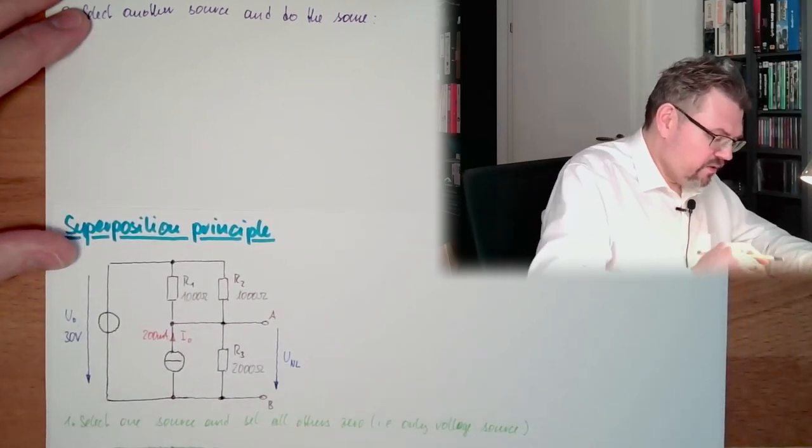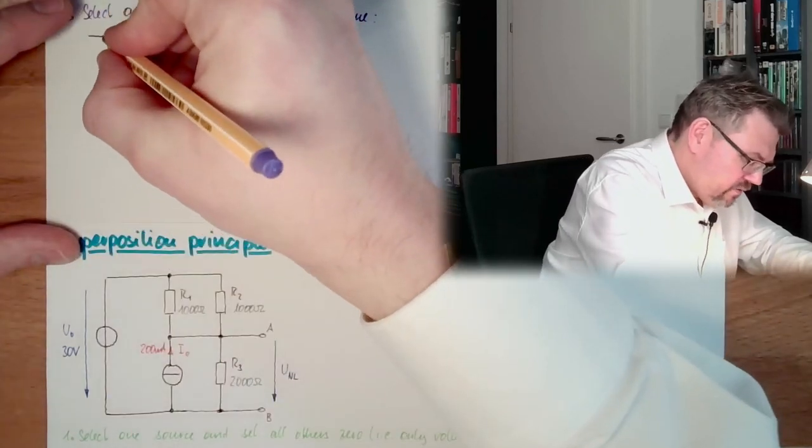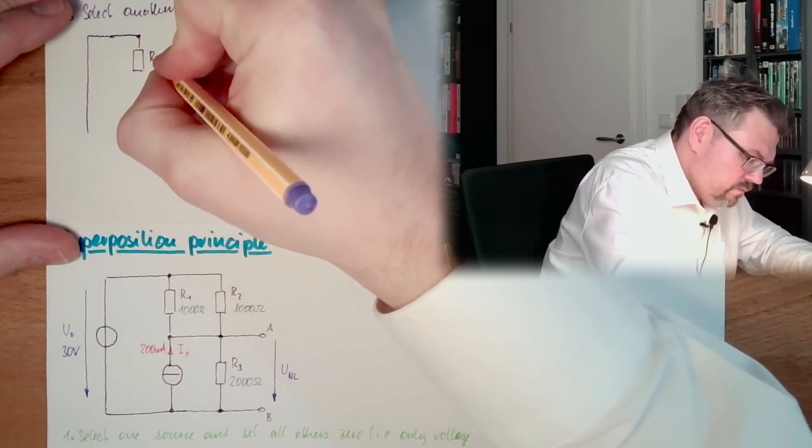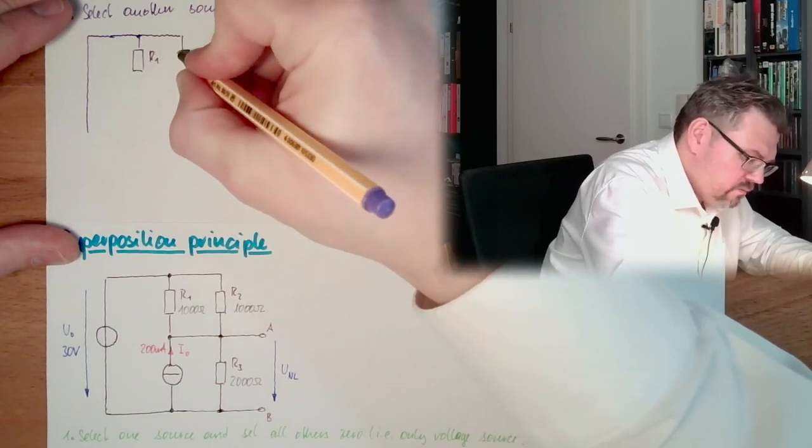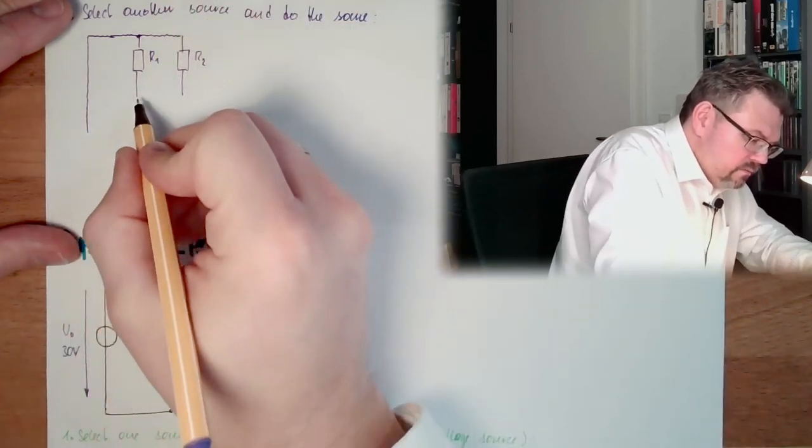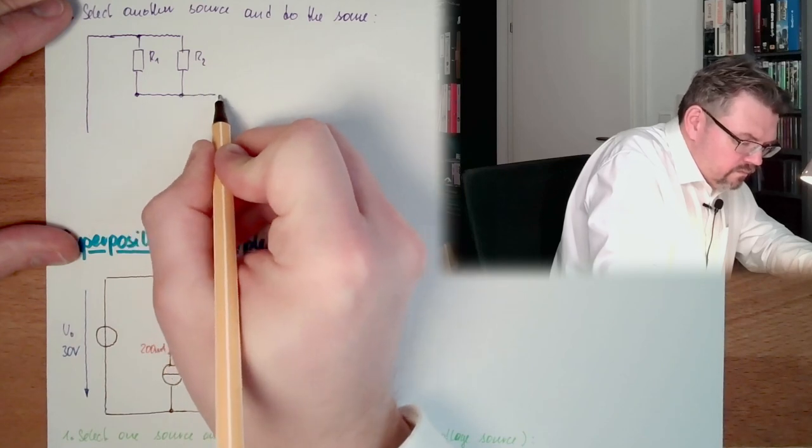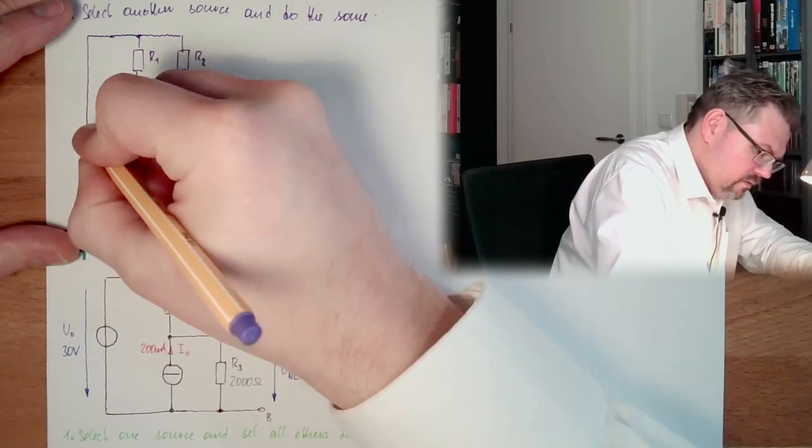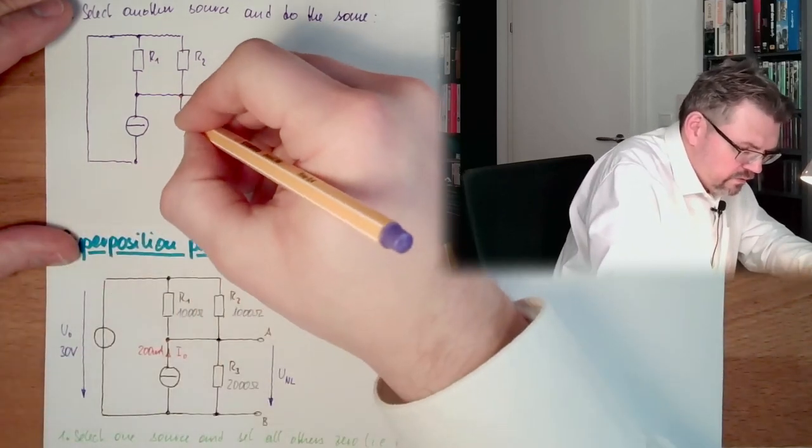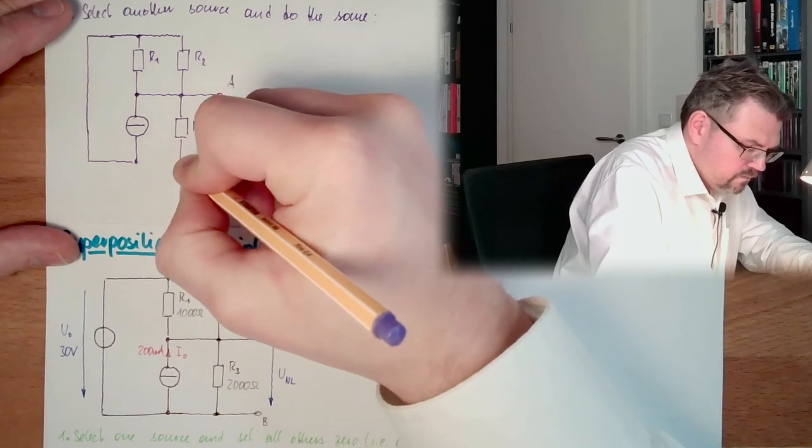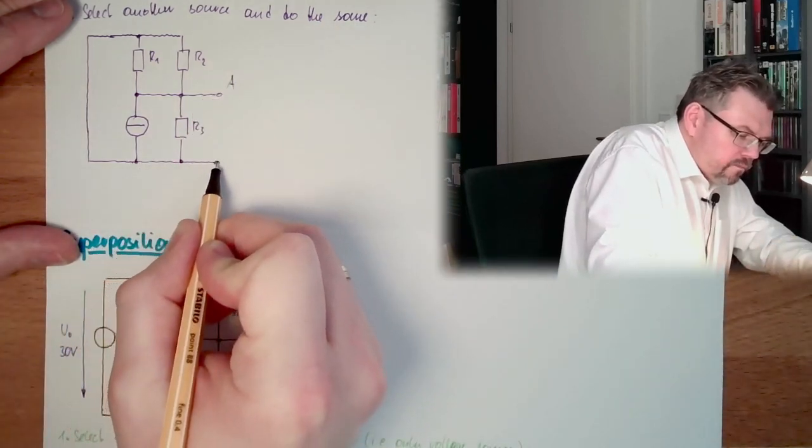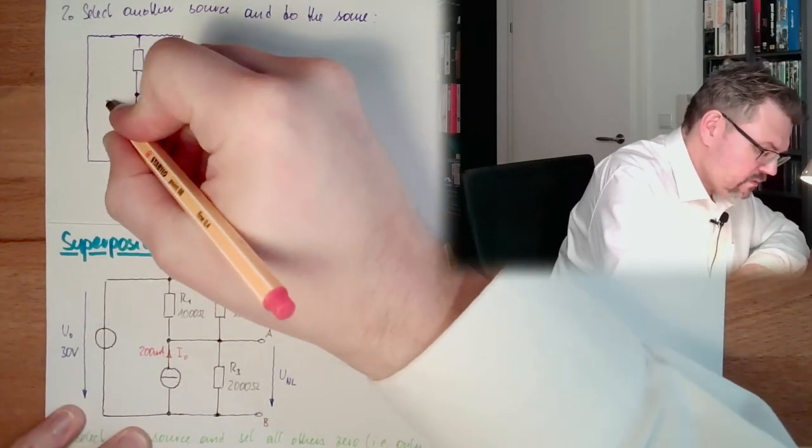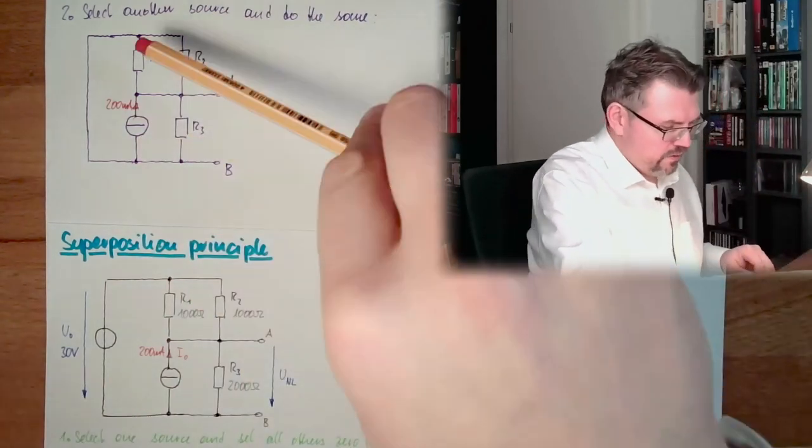I am now setting zero the voltage source. So I need a zero-setted voltage source. Here it is. Then I have the R1. Then of course, I have R2. Here is A. Here, now I have the current source. And of course, I have also R3. So here, actually, we have our 200 milliamps. And this is 1000, 1000, 2000.